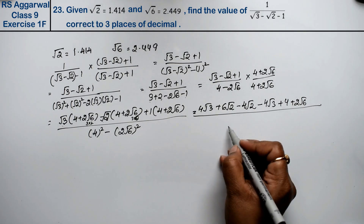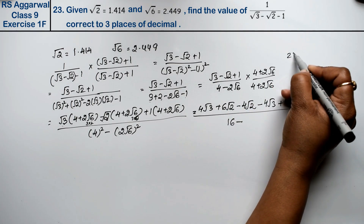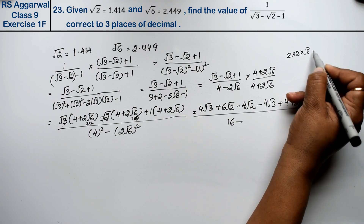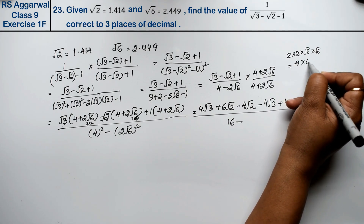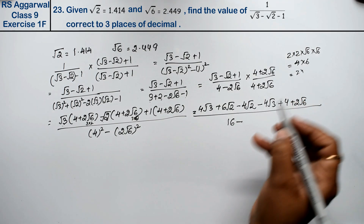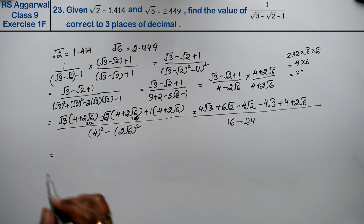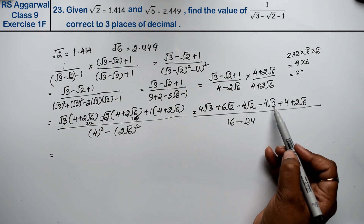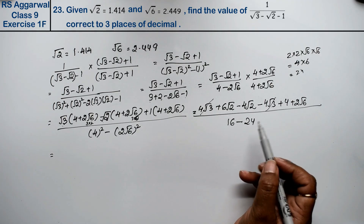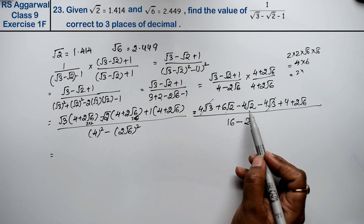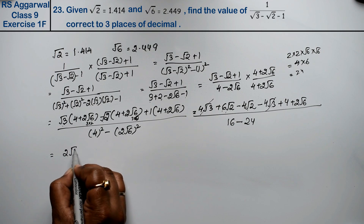Upon the denominator: 4 squared is 16 minus 2 root 6, and 2 into 2 into root 6 into root 6 gives 2 times 2 is 4, into 6 is 24. Now see: 4 root 3 plus and the minus cancel each other. This is 1 plus and this is 1 minus, so we subtract giving 2 root 2.